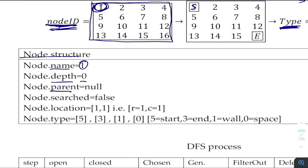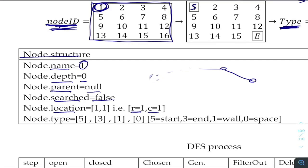Each node has fields: parent, searched (false by default), and location meaning row and column. When I say location I don't mean GPS, though you could generalize this — for example, using GPS coordinates to generate a path from city A to city B. You can implement DFS or other state space search algorithms in much more important real-world problems.